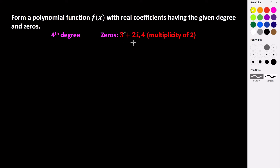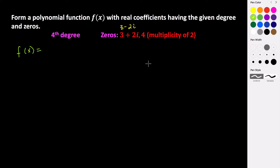Because we're given this complex imaginary zero, we also know that its conjugate, three minus two i, is going to be a zero as well. So the first thing I'm going to do is write this polynomial function in factored form, and then we will expand that factored form to construct our polynomial in standard form.